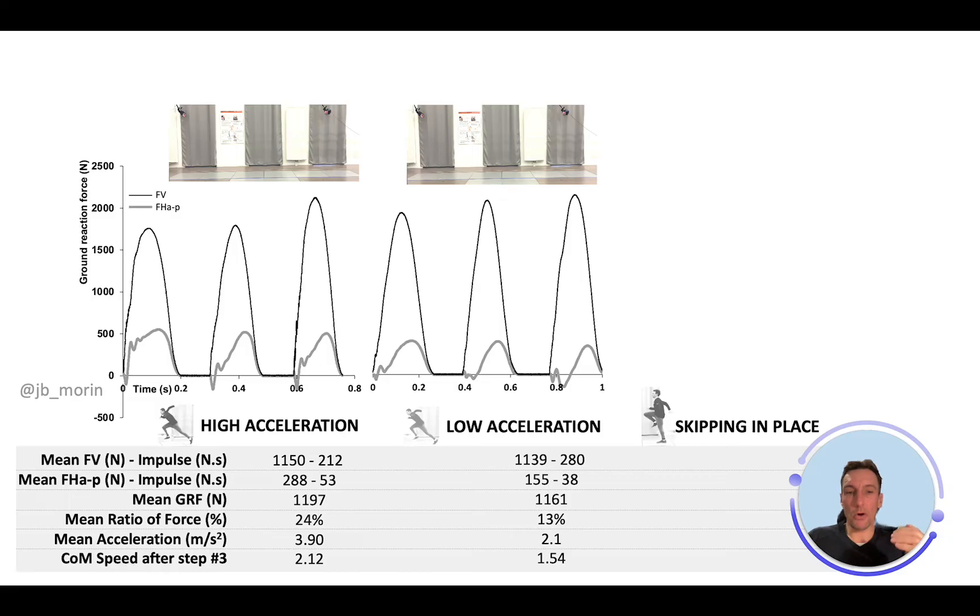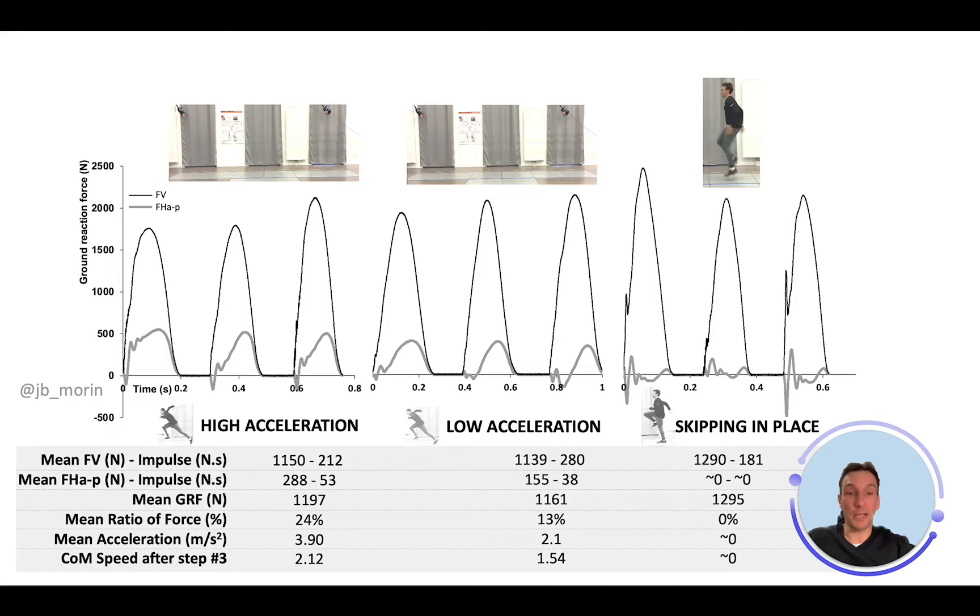To show this with an extreme example, let's look at skipping in place. When you're skipping in place, by definition you're not moving forward, so there's absolutely no speed or acceleration generated. It's not surprising to see that the average horizontal force data is about zero.